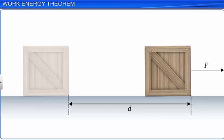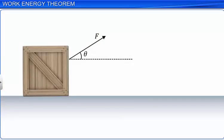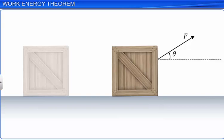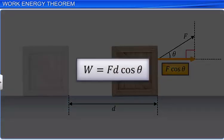Let's consider a second case, where the direction of the force is not along the direction of the motion of the block. Here, the force makes an acute angle θ with the horizontal. In this case too, we observe that the block moves in the horizontal direction only. The total amount of force is not being fully utilized; only the component of the applied force along the direction of the displacement is responsible for the motion of the block. Thus, the work done on the block by the force is the product of F cosθ and displacement.